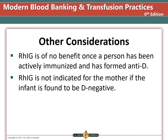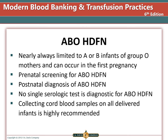RHIG is of no benefit once a person has actively immunized and developed anti-D, and is not given if the infant is also D-negative. ABO hemolytic disease of the fetus and newborn is limited to type A or B infants of group O mothers and can occur in the first pregnancy. When a mother is group O, blood type and DAT are performed on the cord blood sample after delivery — the antibody screen is not helpful in diagnosing this. This is now the most common but least severe form of HDFN due to RHIG implementation. Phototherapy is usually sufficient to treat infants who develop jaundice 12–48 hours after delivery.